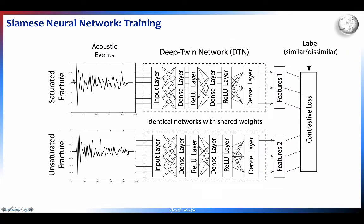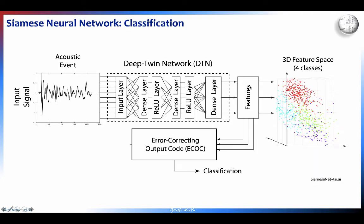We use this neural net by giving a Siamese — also known as a twin — neural net pairs from either similar or dissimilar conditions. You don't need a specific class index; you just tell the network whether it's the same or different. We give it two signals from saturated, two from unsaturated, or one from each, and it performs dimensionality reduction through a contrastive loss.